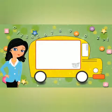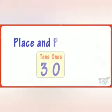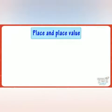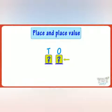Hi kids, today we will learn what is place and place value of a digit in a number. Let's get started. Place is the position of the digit in a number. For example, here we have a number — the place of three in this number is the tens place.